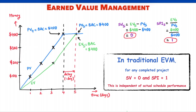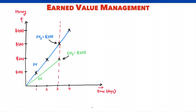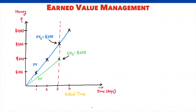The concept of earned schedule allows us to overcome these problems. Let's go back to our example. It is the end of the 3rd day and we have an earned value of $200, with a planned value of $300. Both earned value and planned value are in dollars. In our new approach, instead of dollars, we will focus on time. A new term here: actual time — the time already consumed. Actual time for this example is 3 days.